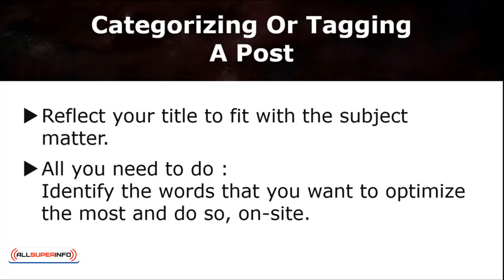Next is categorizing or tagging your post. When it comes to categorizing or tagging, you'll need to reflect your title to fit with that subject matter. This would ease the process of Google locating your site. All you need to do is identify the words you want to optimize the most and do so on-site.